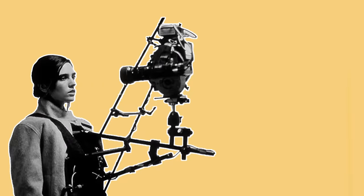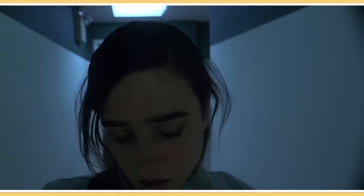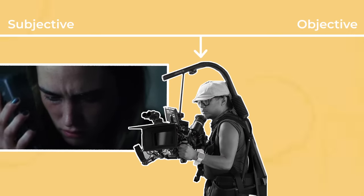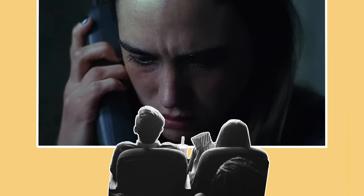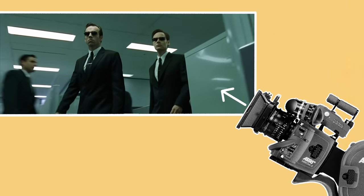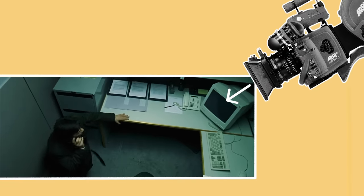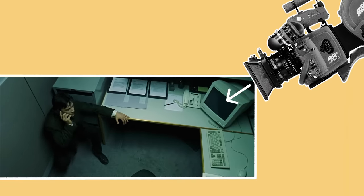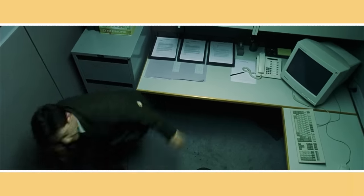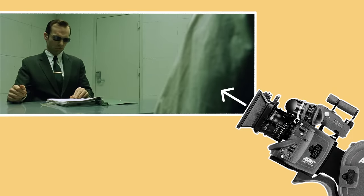But there are also other camera techniques other than using literal POV shots that can be used to create a visual experience which is more subjective and focused on the character. Using a tight shot where the camera is placed physically closer to the actor during filming creates a more subjective, closer bond between the audience and the character than filming in a wider shot. Shooting from either a low angle to make characters appear larger than life, or a higher angle that diminishes them, is a way of imposing a feeling on the image.